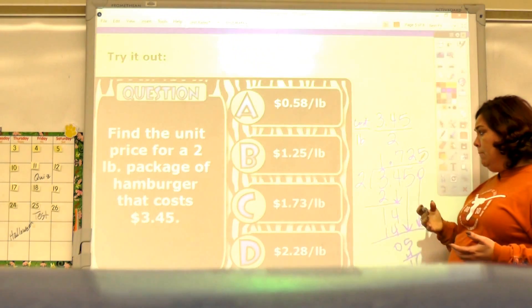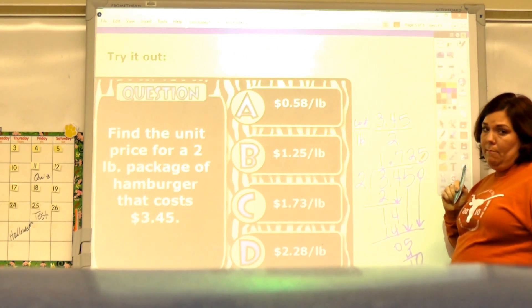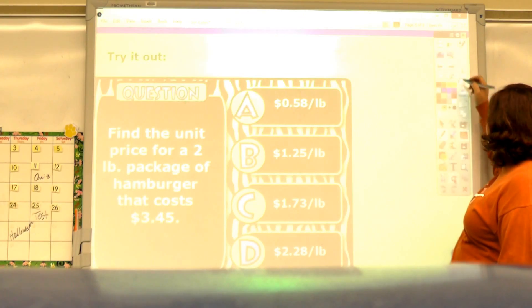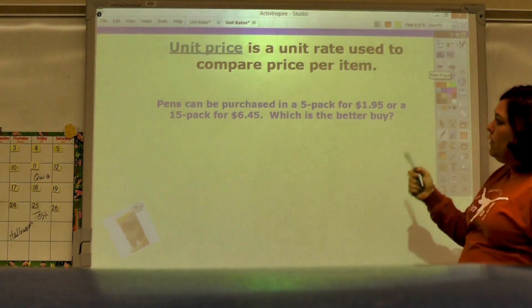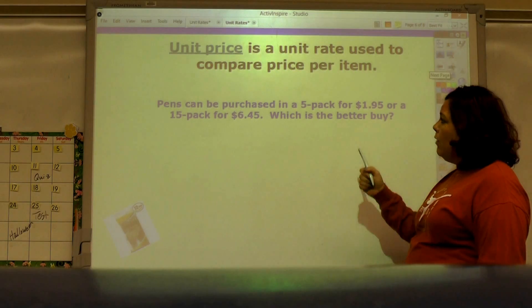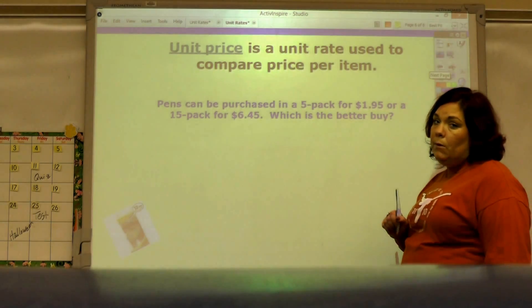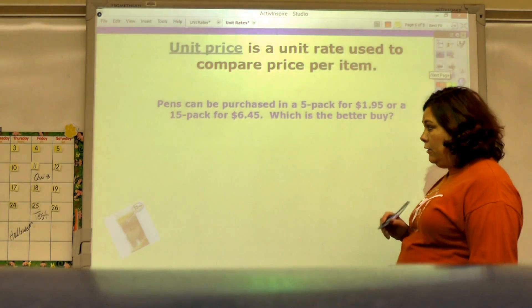Sometimes you have to keep adding zeros because that's the only way you're going to be able to compare and get an actual amount. So a unit price is a unit rate used to compare price per item.